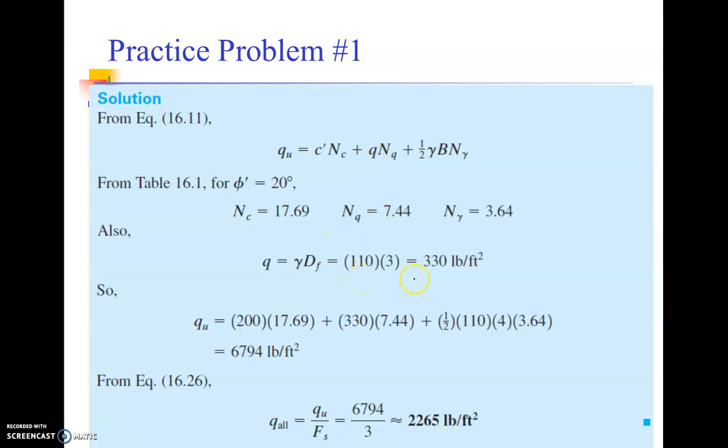And then just putting the values: c dash Nc plus gamma Df or q Nq plus half gamma b N gamma, and finally dividing it with the factor of safety, you can get the allowable bearing capacity over here.